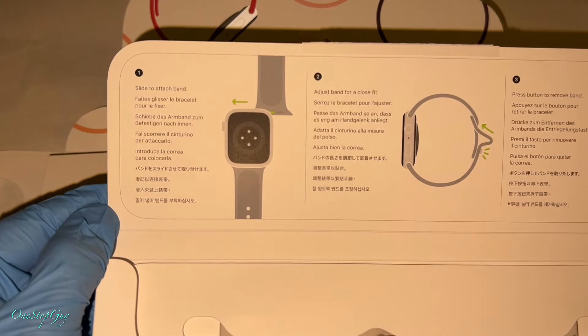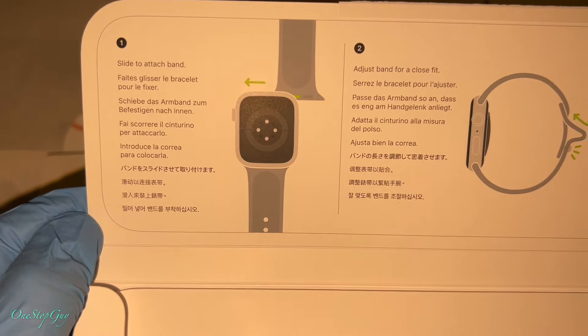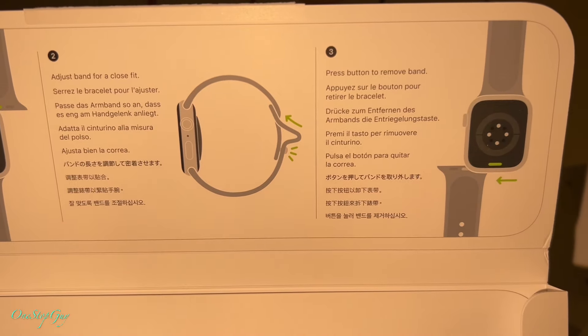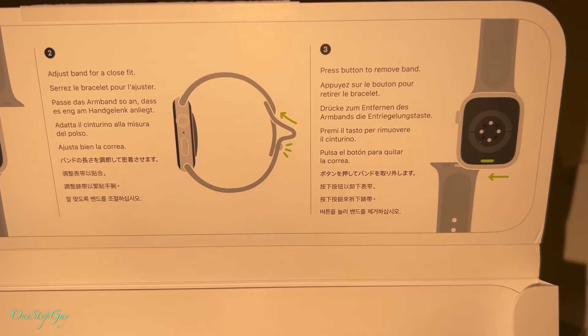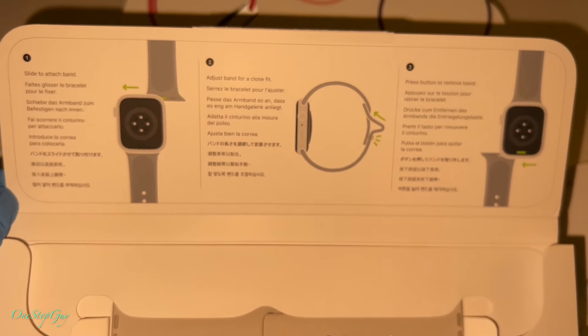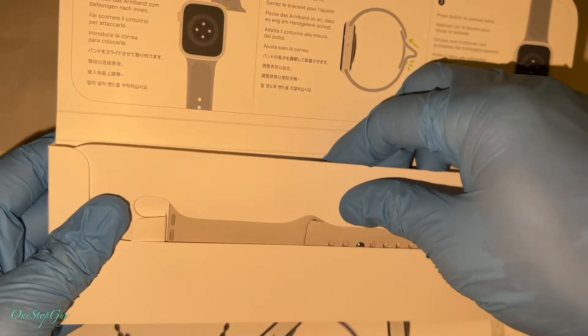Once you open it up you're gonna see this right here. You got numbers 1, 2, and 3. This is showing you how to attach the band: slide to attach band, number 2 adjust band for a close fit, and then number 3 press button to remove band. Pretty much showing you how to put it on and take it off.